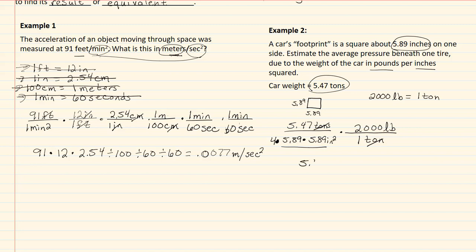I'm actually going to be going 5.47 times 2,000 divided by 4, divided by my 5.89, divided by my 5.89, unless I had actually multiplied this part here first. Now, I get that this equals 78.836 pounds per inches squared. And I'm done.